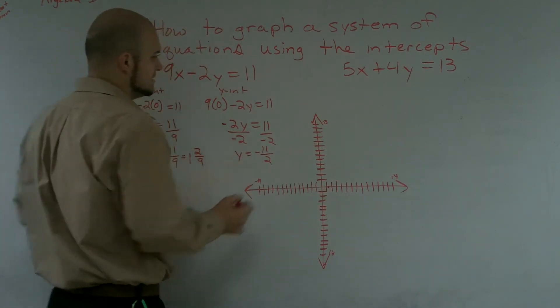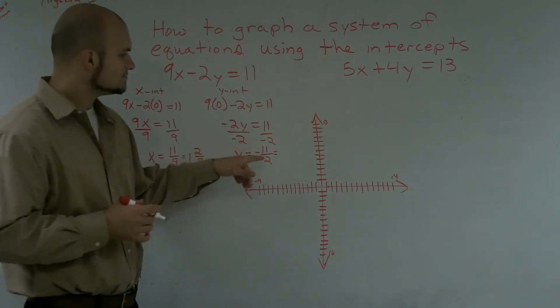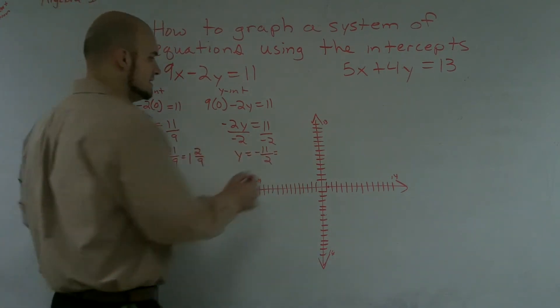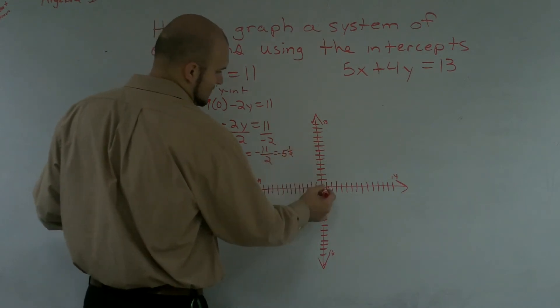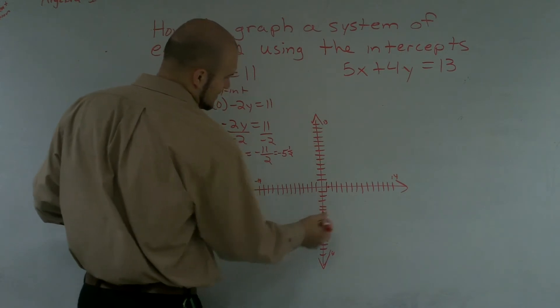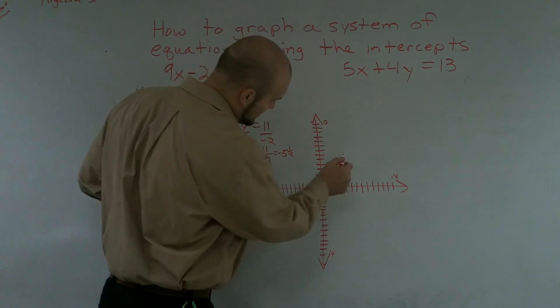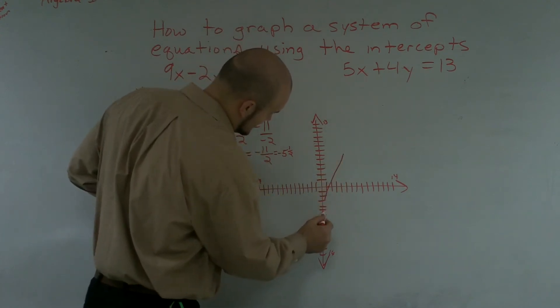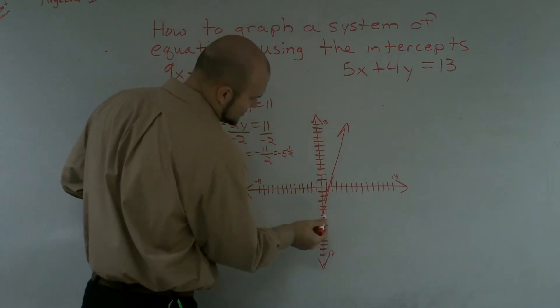Then here, my y-intercept is, that can be converted to, 2 goes into 11 negative 5 times with one half. So I go down 5, 1, 2, 3, 4, 5, and go halfway. So now, I see those are my two intercepts. All you guys simply got to do now is just connect your two points.